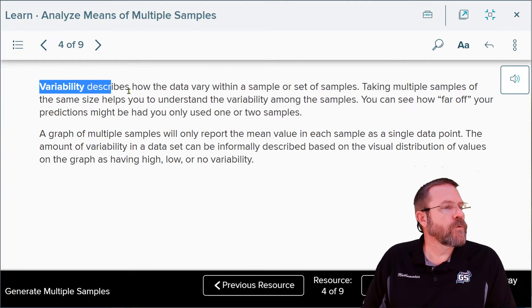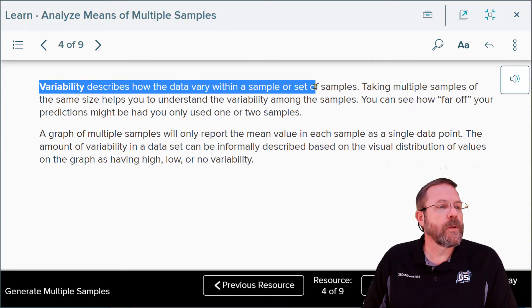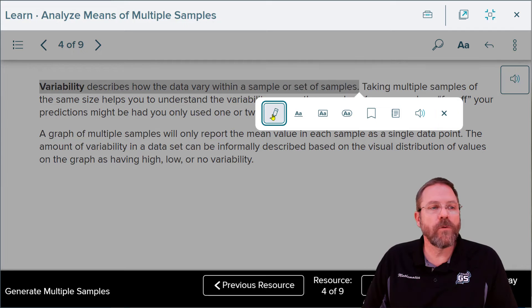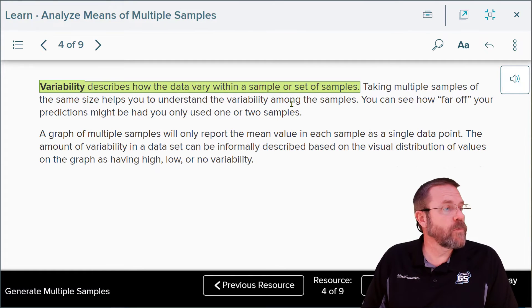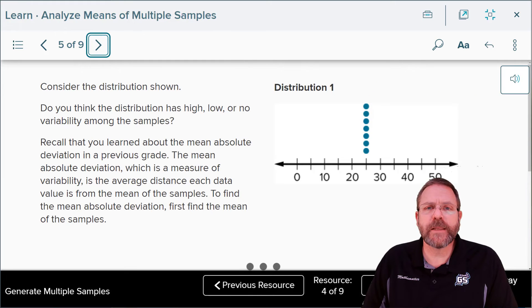Now that leads us to a new vocabulary term which is variability. Variability describes how the data vary within the sample or the set of samples. In other words, how close are all those data points going to be together. Taking multiple samples of the same sample size helps you to understand the variability among the samples. How can you see how far off your predictions might be had you only used one or two samples? The amount of variability in a data set can be informally described based on the visual distribution of the values on the graph as having high, low, or no variability. That was a lot of words, wasn't it? Let's see what they mean by that.